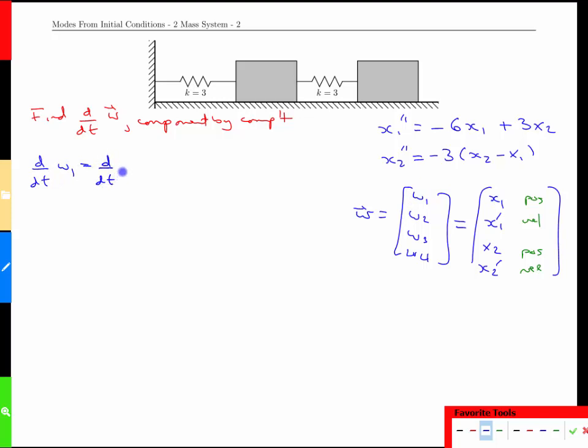Well, w1 is x1, so its derivative is the same as the derivative of x1. The derivative of x1 is x1 prime. That's what prime means, but x1 prime is w2. Nice and easy.